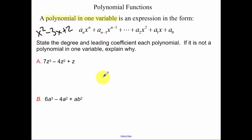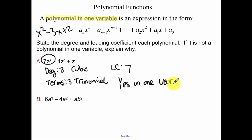So state the degree and leading coefficient of each polynomial. If it's not a polynomial in one variable, explain why. So our degree, you look at which term has the highest degree. So our degree is 3, which makes it a cubic polynomial. And then our terms, there's 3 terms that makes it a trinomial. And then our leading coefficient. Look at the term where you picked your highest degree from. That leading coefficient is 7, and yes, we are in one variable.